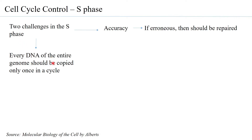The second challenge is that every DNA of the entire genome should be copied only once in a cycle. In human cells we have 23 pairs of chromosomes — a total of 46 DNA molecules. So after the S phase you should have 92 DNA molecules total, and they are supposed to be identical, homologous copies.